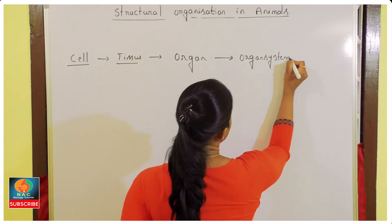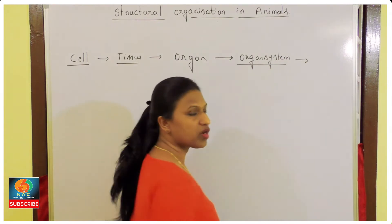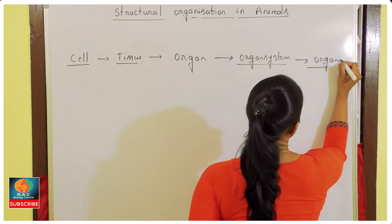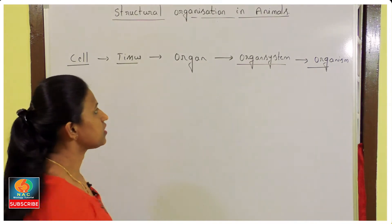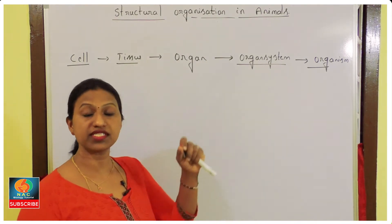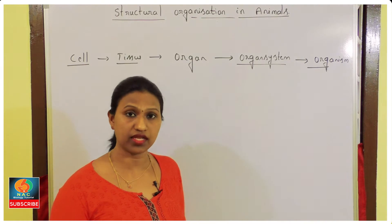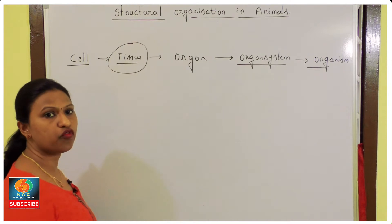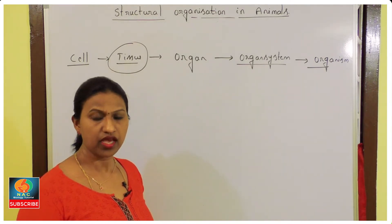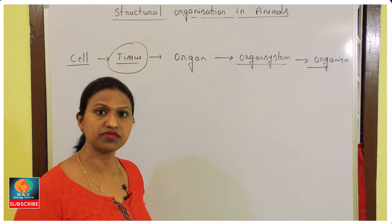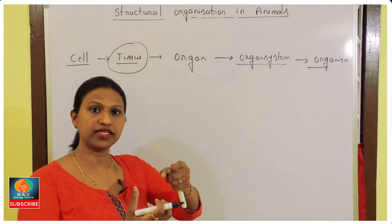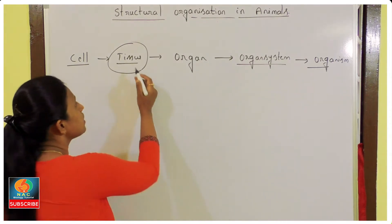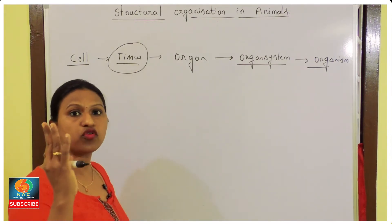Organ system level of organization leads to the formation of an organism. As we are talking about multicellular organisms, the most advanced multicellular organism like human beings — their body is made of four types of tissues. Organs coordinate with each other to form an organ system, and this organ system or organ is made of only four types of tissues.